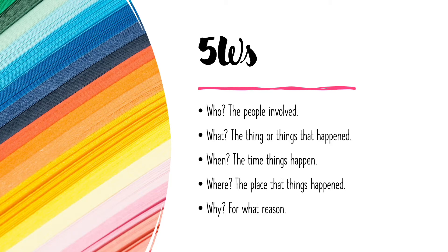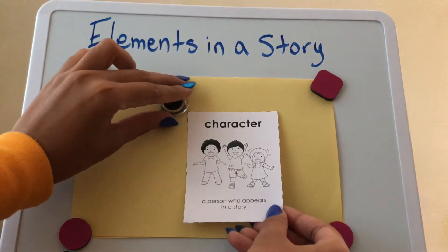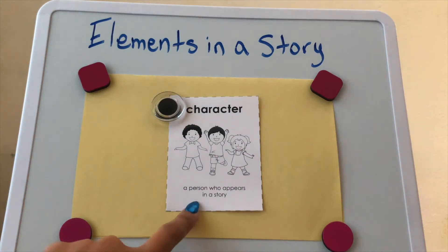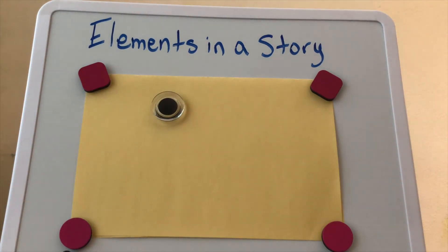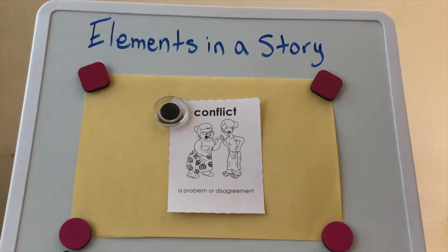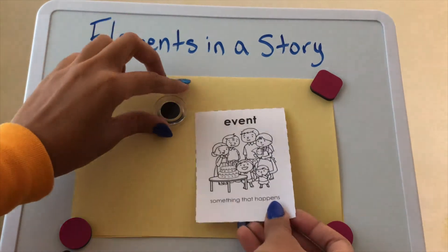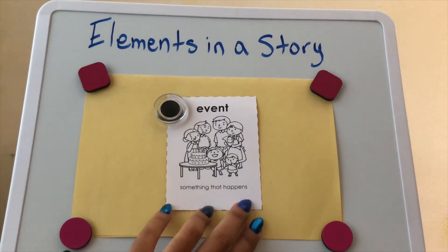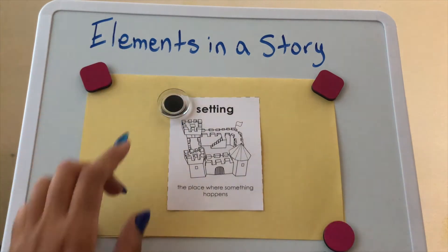When we answer these questions, it's good to keep in mind the following vocabulary. A character is a person who appears in a story — sometimes it could be animals or things. Conflict is a problem or disagreement. An event is something that happens in the story. And setting is the place where something happens.